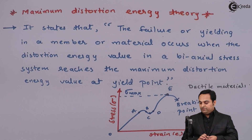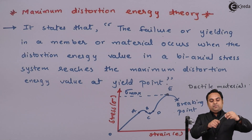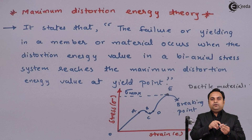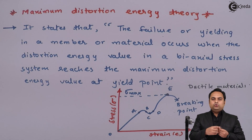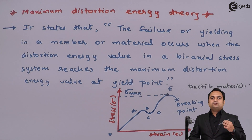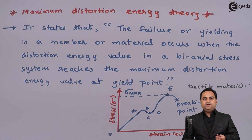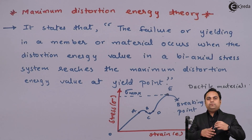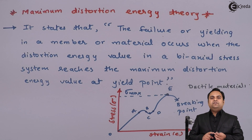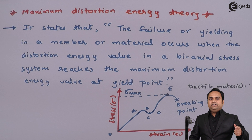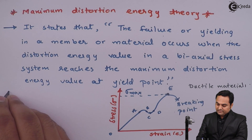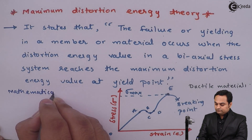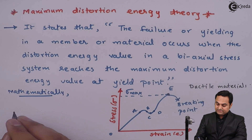Distortion energy means, for example, if we have a pen and I am applying a load over this pen, then because of the load there is stress developed inside it, and because of that stress there is some energy stored inside the pen. That energy is called distortion energy because it is stored due to the change in shape. When that energy value reaches the energy value at the maximum stress point, the material fails.